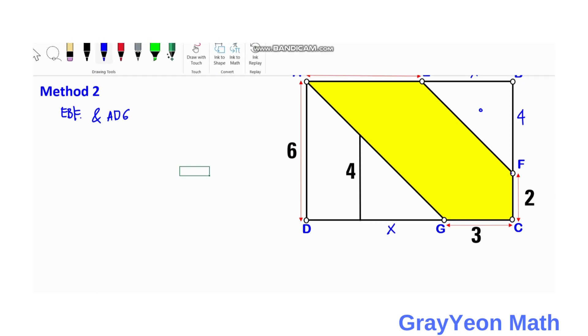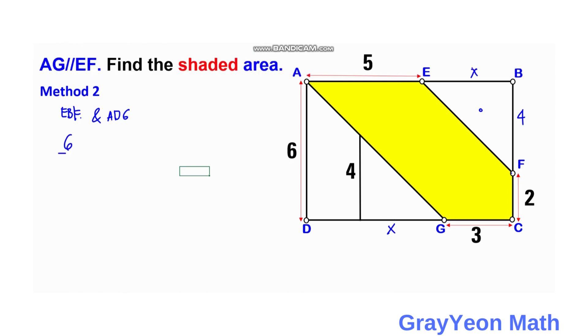So we have here 6. Let's call the whole length as D, G. So 6 over 4 is equal to D, G over X. So D, G, this will become 3 halves, 3 over 2 is equal to D, G over X. So D, G is equal to 3 halves of X.